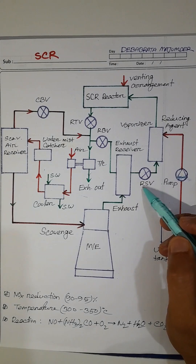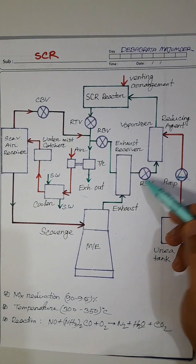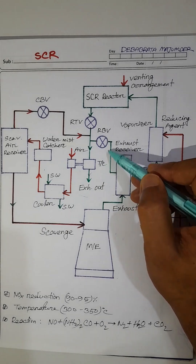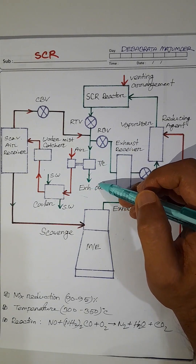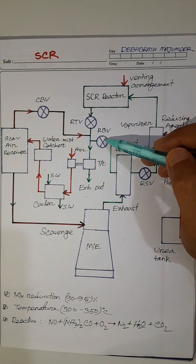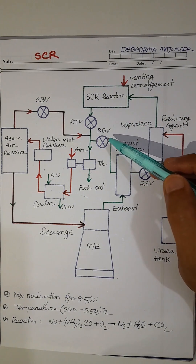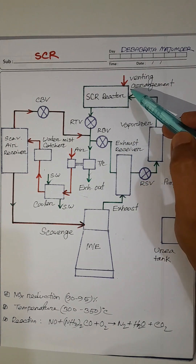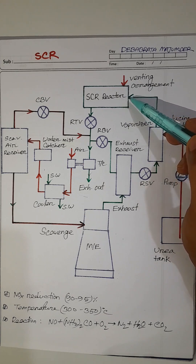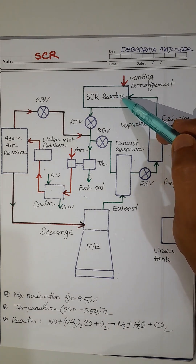At that time, RSB is closed and RTB is closed. Exhaust gas comes here and goes out. At that time, the venting arrangement works. Whenever the vessel is running in Tier 2 area and RBB is open, exhaust gas bypasses. At that time, venting arrangement is done to avoid exhaust gas accumulation and soot formation in the SCR.